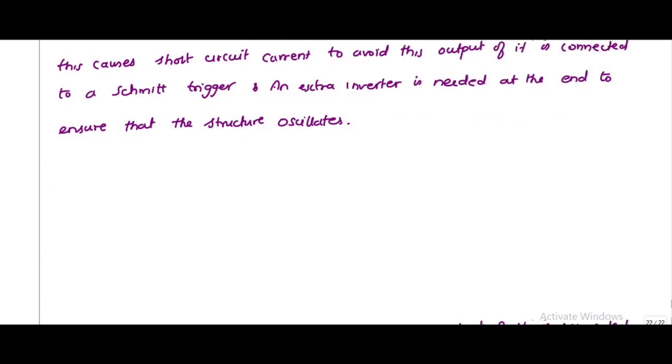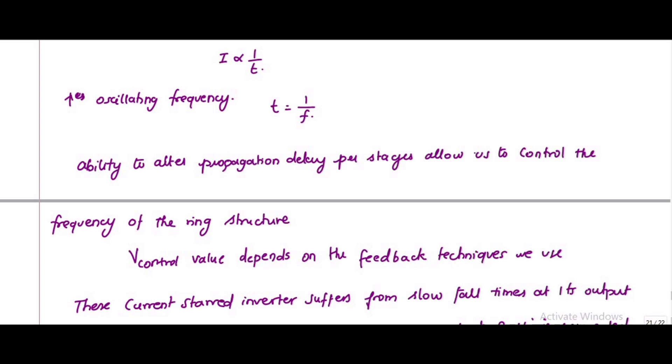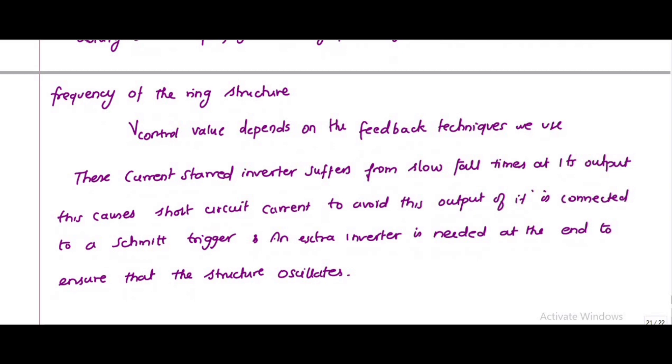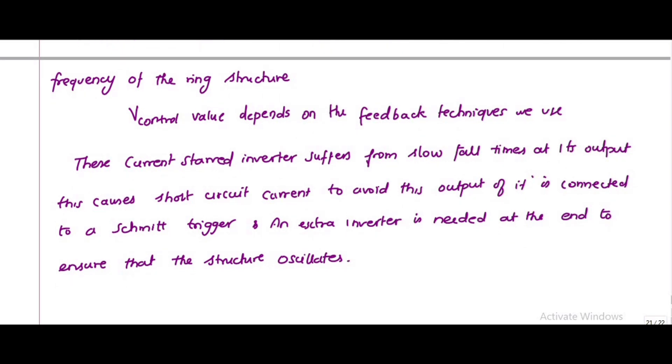This V-control value depends on the feedback technique we use. These current-starved inverters suffer from slow fall times at their output, which causes short-circuit current. To avoid this, the output is connected to a Schmitt trigger, and an extra inverter is needed at the end to ensure the structure offsets.